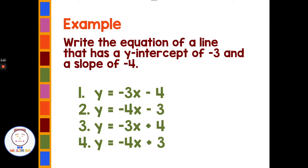Let's look at a new example. Write the equation of a line that has a y-intercept of negative 3 and a slope of negative 4, and we have four choices. It's important to keep straight which is the slope and which is the y-intercept. The slope is the number in front of the x, and the y-intercept is the constant at the end. The one with a y-intercept of negative 3 and a slope of negative 4 is answer choice 2.